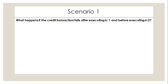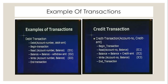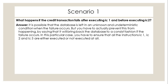We have tried to understand this in a different way. The first question is: what happens if the credit transaction fails after executing IC1 but before executing IC2? IC1 has been read but IC2 is not updated. If the database fails in this situation, it is possible that the database is left in an unknown and undeterministic condition.